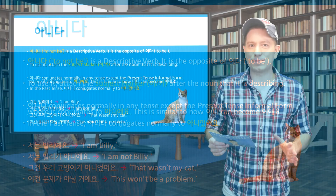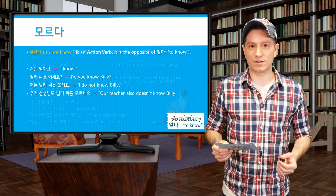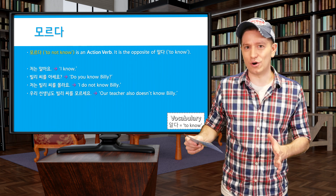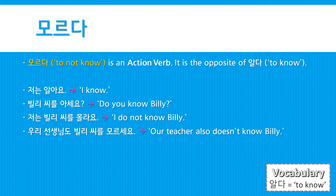The next negative verb we're going to look at is 모르다, which means 'to not know.' It's the opposite of the verb 알다, 'to know.' Here are some example sentences: 저는 알아요 — I know. 빌리 씨를 아세요? — Do you know Billy? 저는 빌리 씨를 몰라요 — I do not know Billy. 우리 선생님도 빌리 씨를 모르세요 — Our teacher also doesn't know Billy.